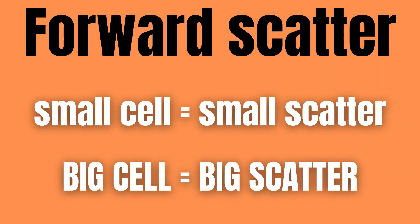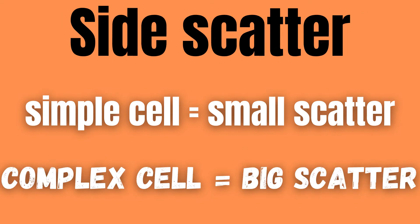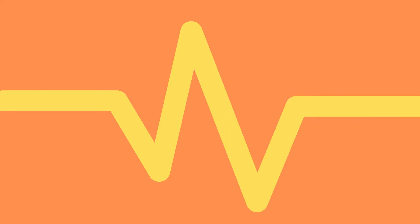Forward scatter is proportional to the size of the cell while side scatter is proportional to the complexity of the cell. Both the forward and side scatter gets detected and converted into an electrical pulse which is directly proportional to the amount of scattered light.